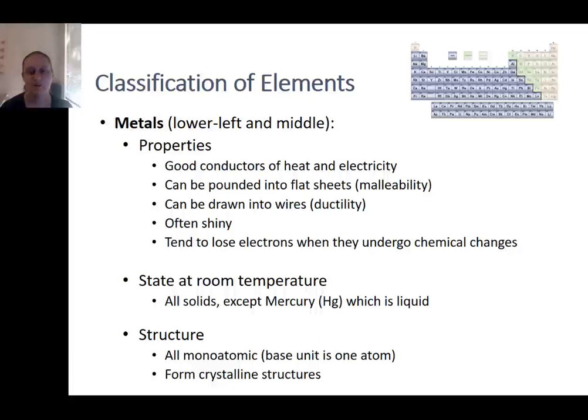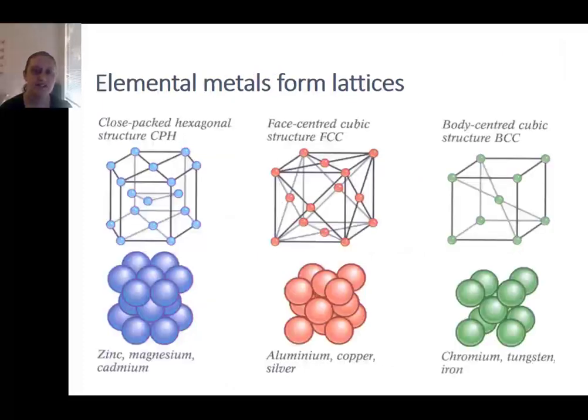The base unit for all metals is a single atom, and these generally form crystalline or regularly arranged structures. Here are some examples of the crystalline solids formed by some of the metals. For now you should just be aware that there are different structures that can be formed, and that the exact structure is going to depend on the metal. The structure is partly what gives metals their properties.